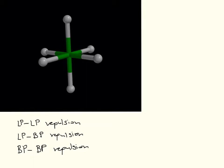Since we do not have any lone pairs, our electron geometry would be octahedral and our molecular geometry would also be octahedral.